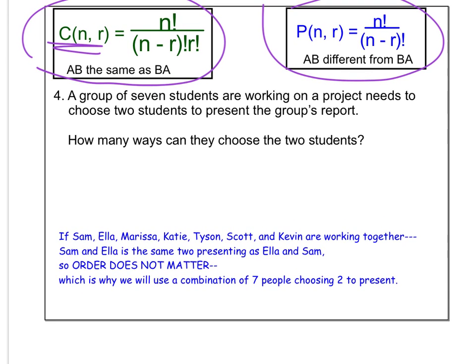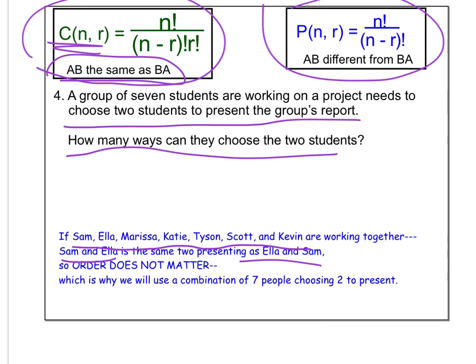So take a look. Group of seven students who are working on a project needs to choose two students to present the group's report. How many ways can they choose the two students? Well, order doesn't matter. If you get picked first or second, it doesn't matter. You're still presenting for the group. So if Sam, Ella, Marissa, Katie, Tyson, Scott, and Kevin, well, Sam and Ella is the same as Ella and Sam. Order doesn't matter. So this is why it's called a grouping.